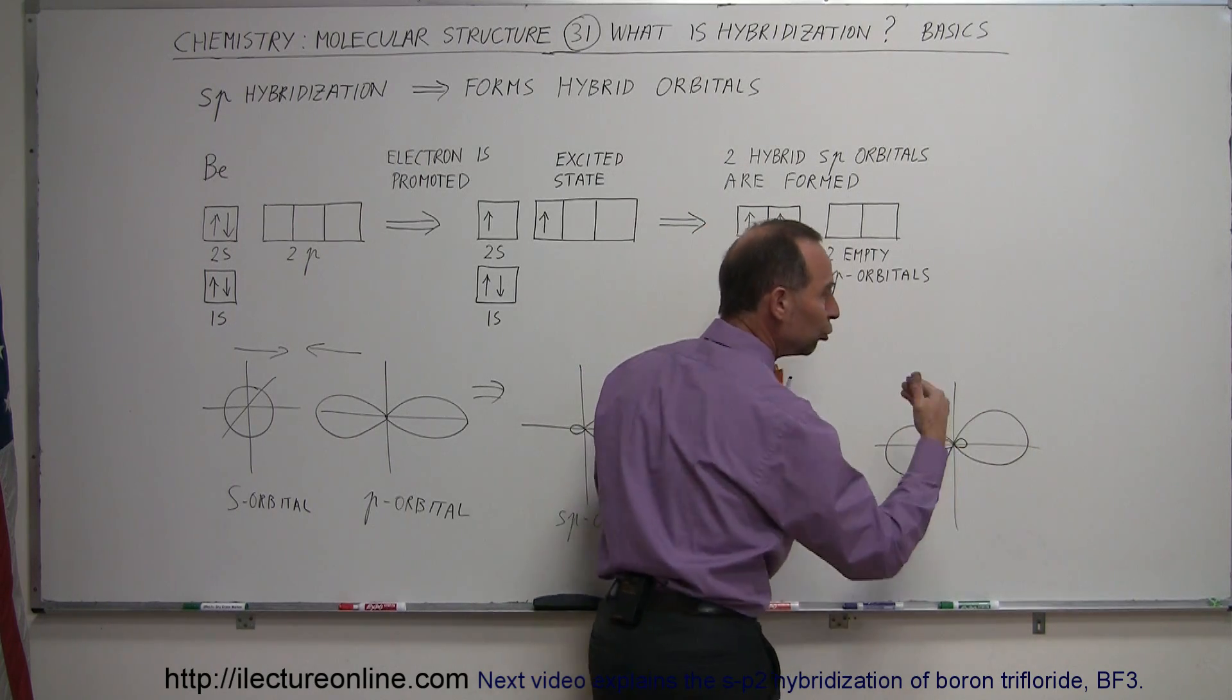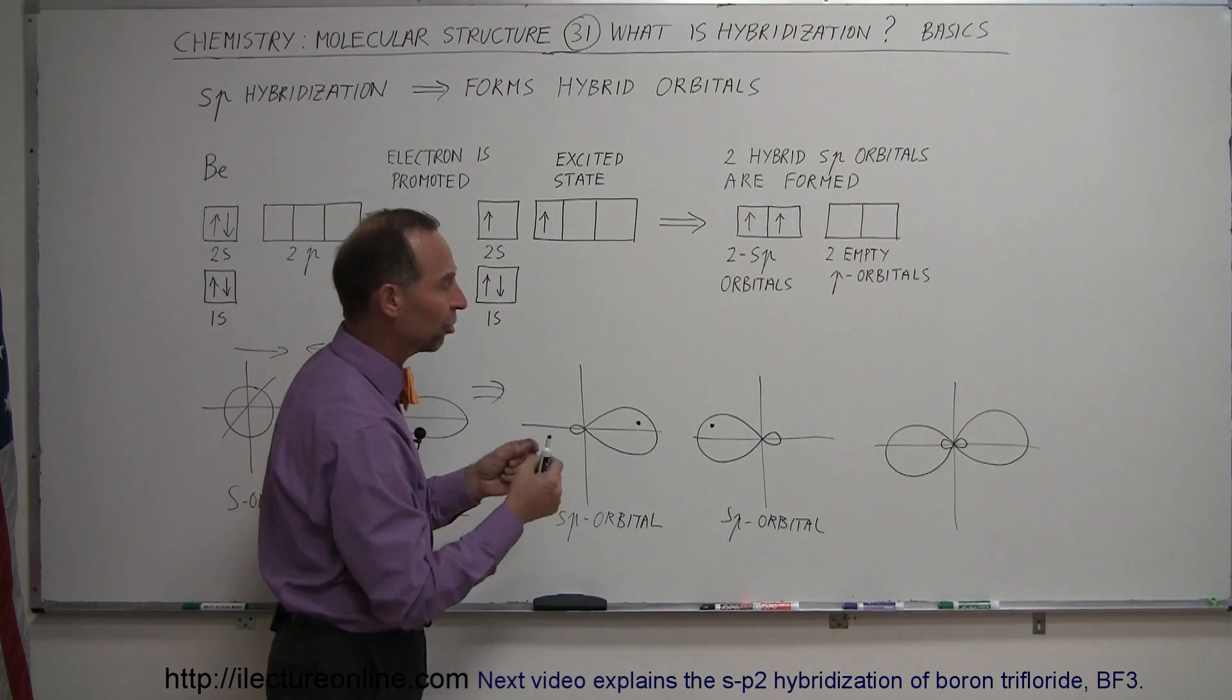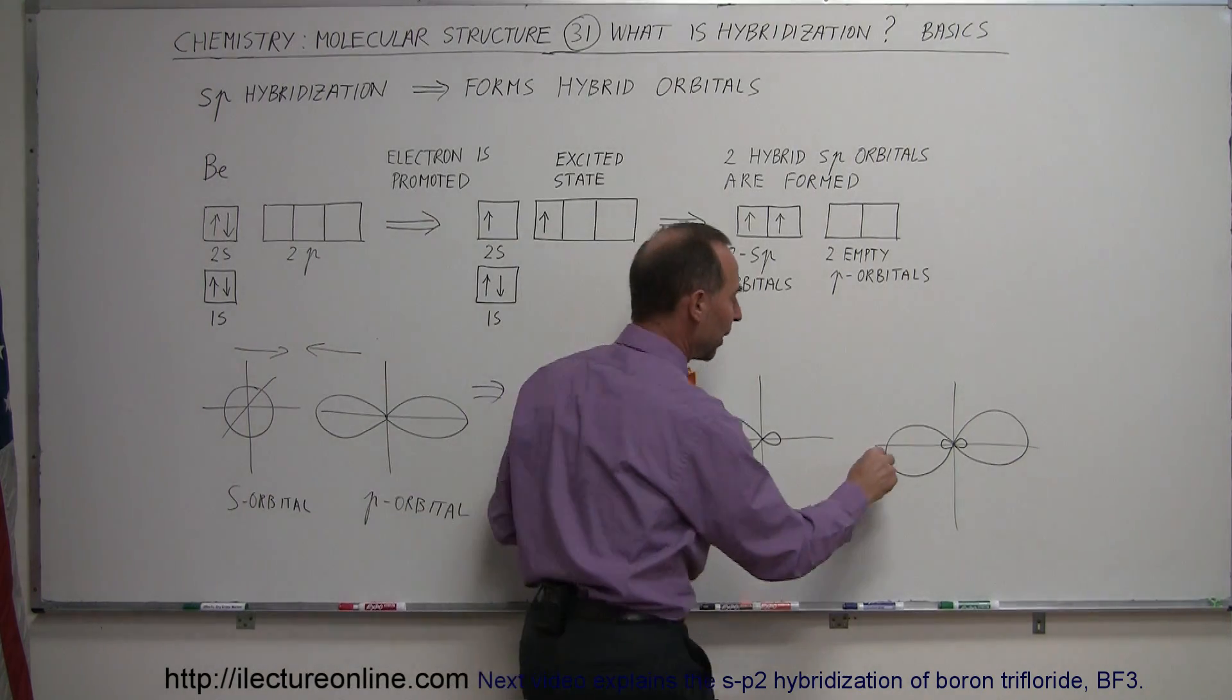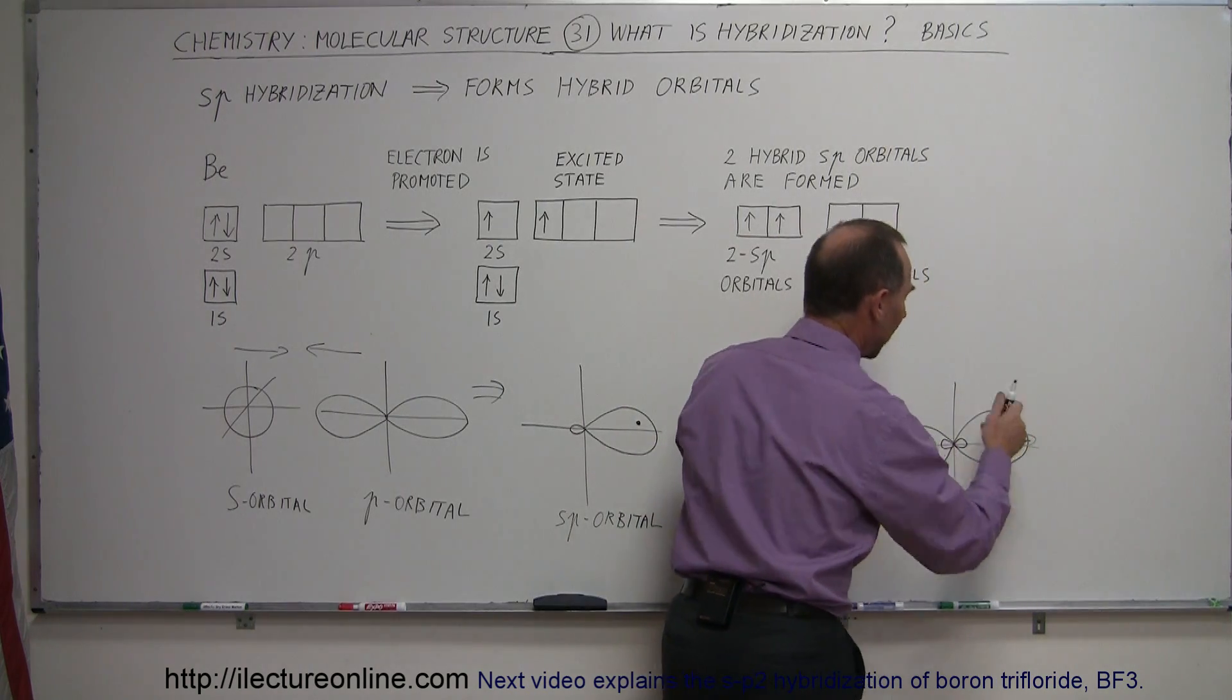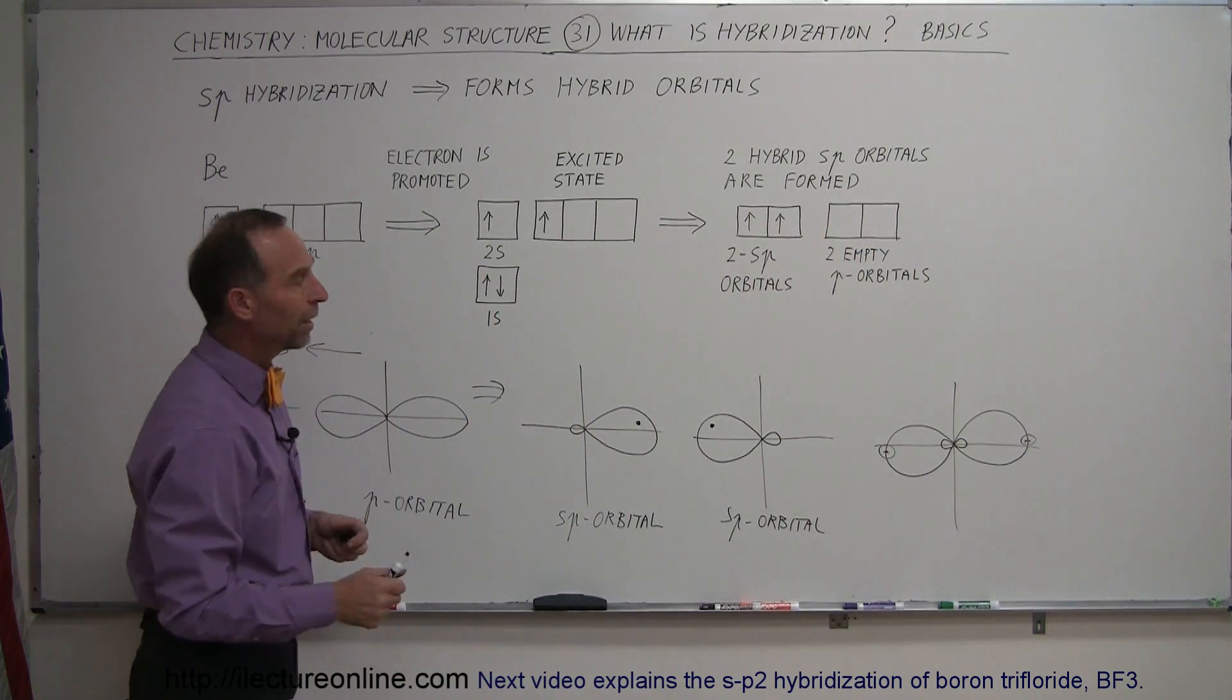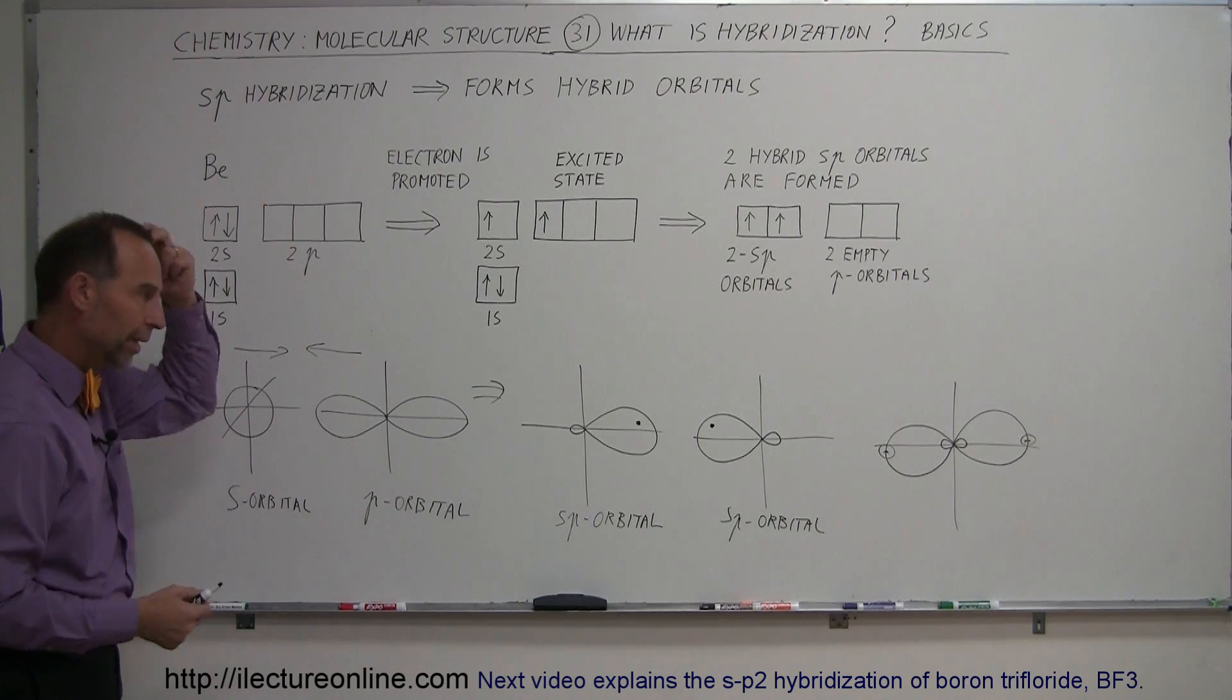So ending up with two new shaped orbitals that are now able to form a bond. So we'll put the one electron in here, put the other electron in there, and now beryllium is ready to start forming bonds with other atoms.